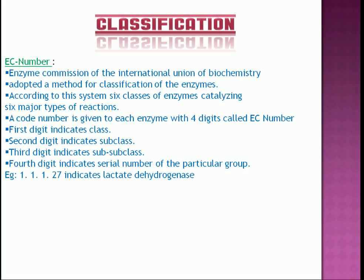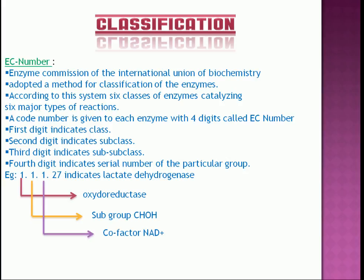For example, 1.1.1.27 indicates lacto-dehydrogenase. One indicates oxidoreductase group, that is the main group. Second one indicates sub-subgroup. The enzyme acts on particular group CHOHA. Third one indicates cofactor, that is NAD+. Fourth number is serial number of the particular enzyme in the group.